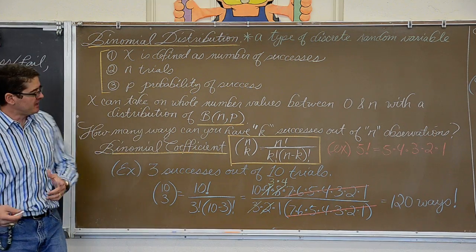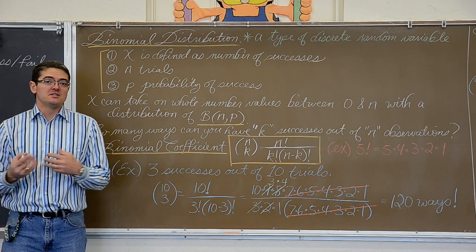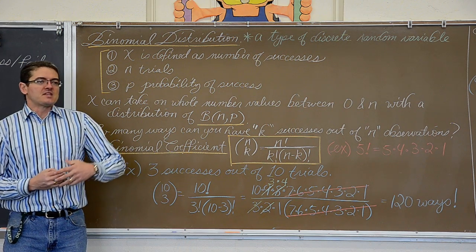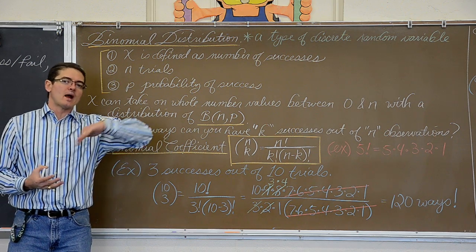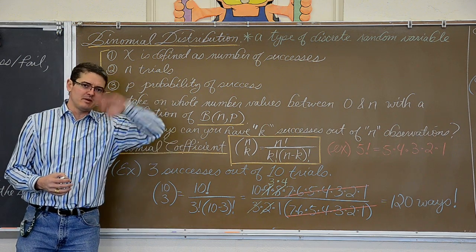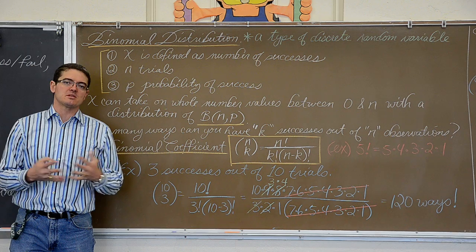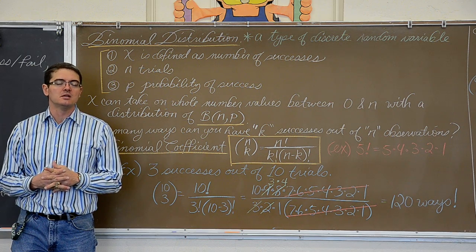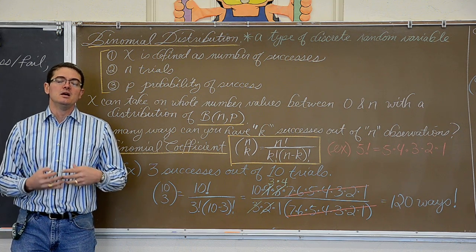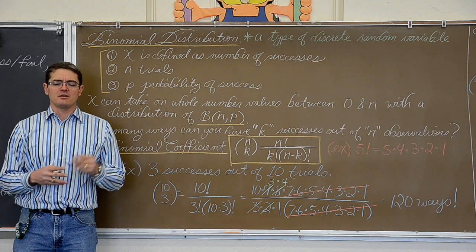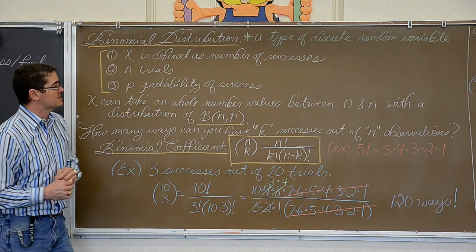Binomial distribution. If you have a binomial setting then your variable will have a distribution. If 35% of the population does something and you go out and sample them, you should get results around 35% — it should be around the same as the population as long as it is not biased. Remember the law of large numbers: as long as your sample or experiment increases in size, the mean of your sample should approach the mean of the population as long as it is unbiased.